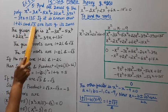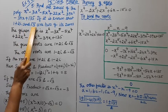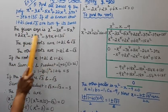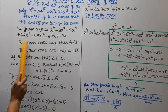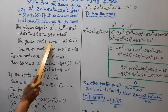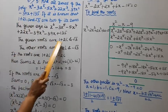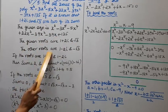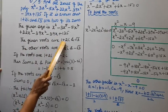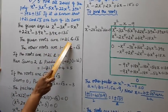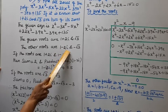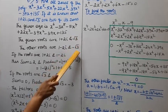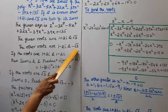The given roots are 1+2i and √3. Since the polynomial has real coefficients, the other roots must include the conjugates: 1+2i gives conjugate 1-2i, and √3 gives conjugate -√3.